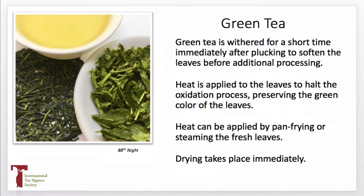Green teas are not allowed to process naturally — shortly after they've been plucked and withered, allowed to go limp and soften, the process of them turning brown or oxidizing is halted. We call it killing green or stopping green. We use heat applied to the leaves to stop the oxidation process and preserve the color and flavor of the green tea leaves. Two traditional methods of applying this heat are by hand frying or pan frying, where the leaves are turned in a wok by hand, or by being steamed. Drying then takes place immediately after.